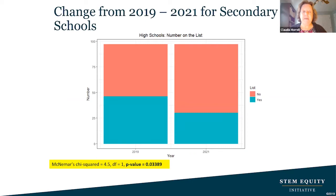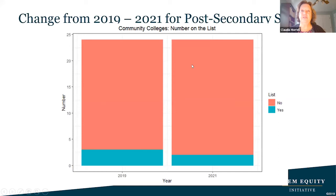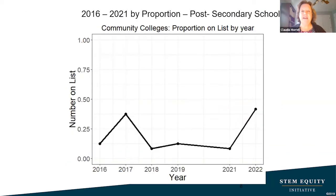From 2019 to 2021 we were really moving in the right direction. The number of schools on the list was declining, and the number not on the list was growing. For secondary schools the improvement was statistically significant. For post-secondary, the sample size is smaller, but we were continuing to move in the right direction.